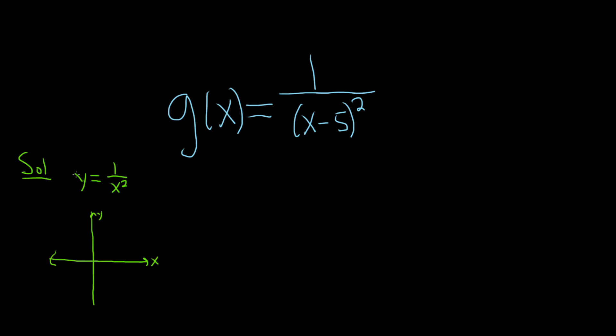This one has two asymptotes. It has one right here along the y-axis, and it has a horizontal one right on the x-axis.